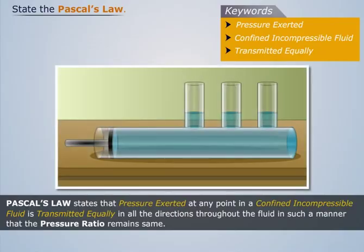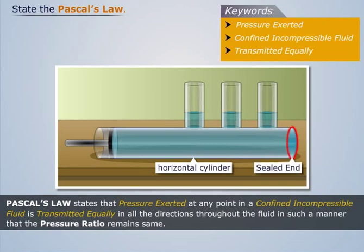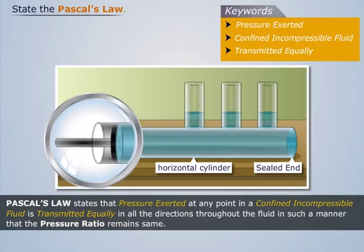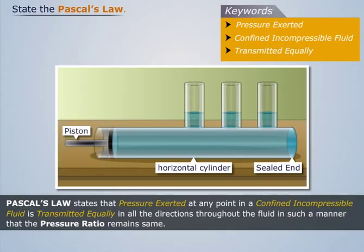To understand this law, let's consider a horizontal cylinder filled with water. Let's seal one end of this cylinder and install a piston at its other end. Then let's connect three vertical tubes to it.